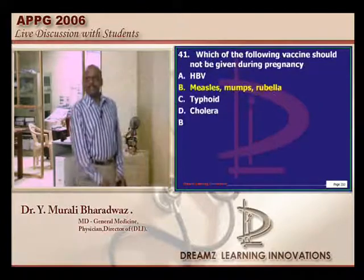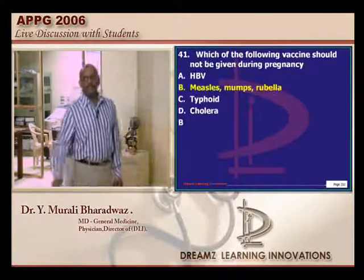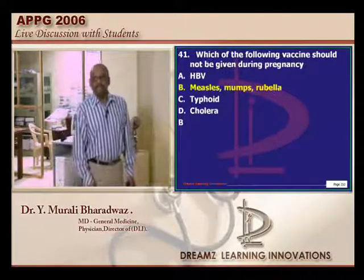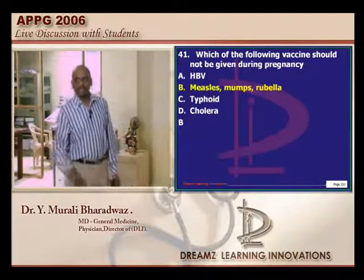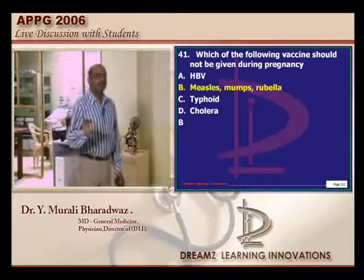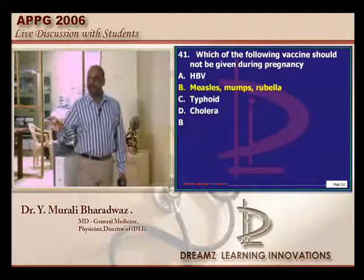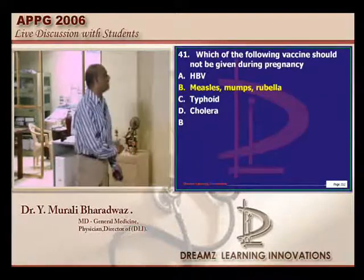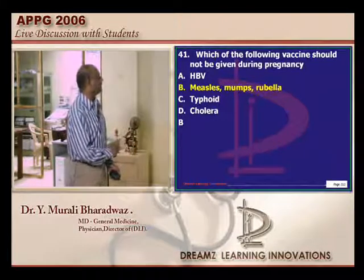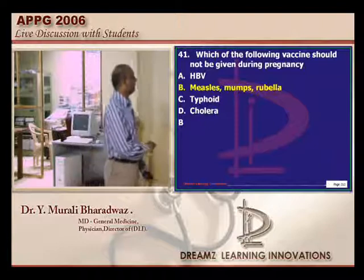Standard question: which vaccine cannot be given in pregnancy without any doubt? You can answer that it is measles, mumps and rubella — that is what needs to be remembered.